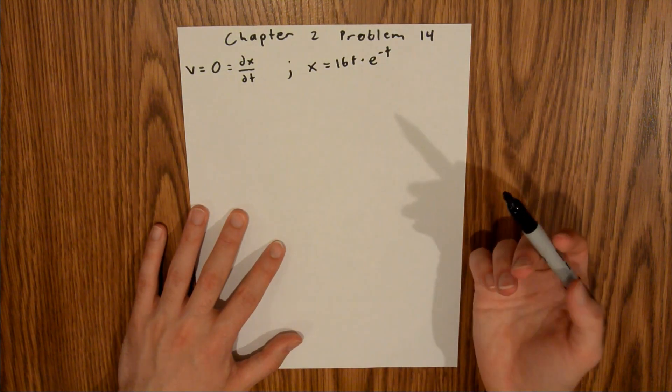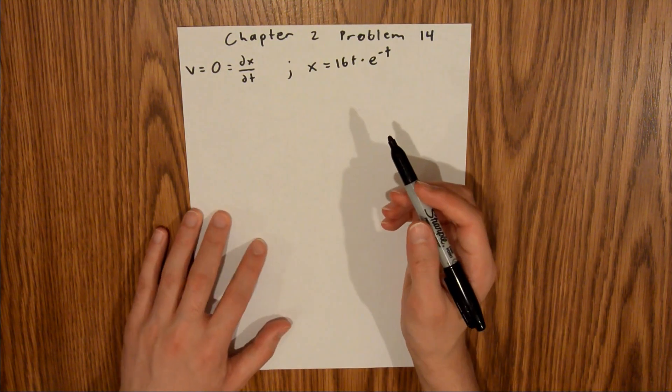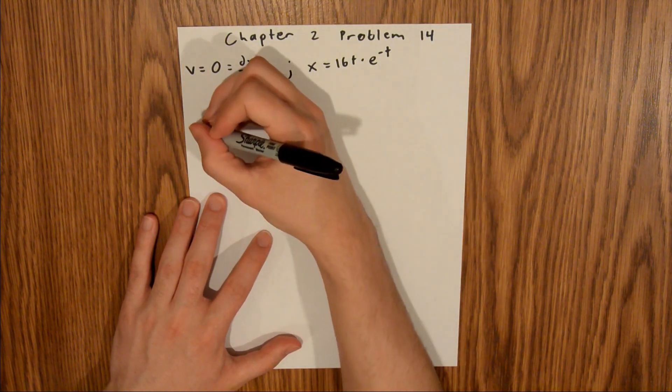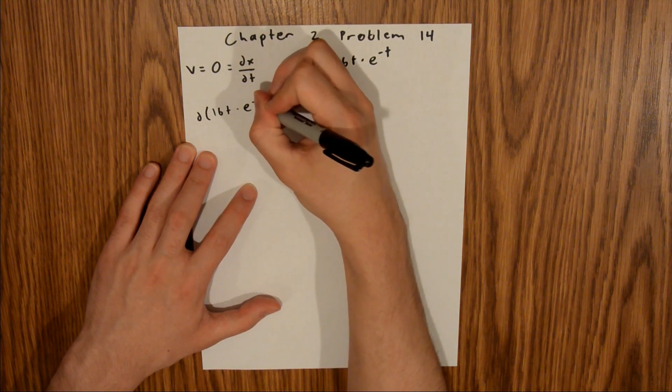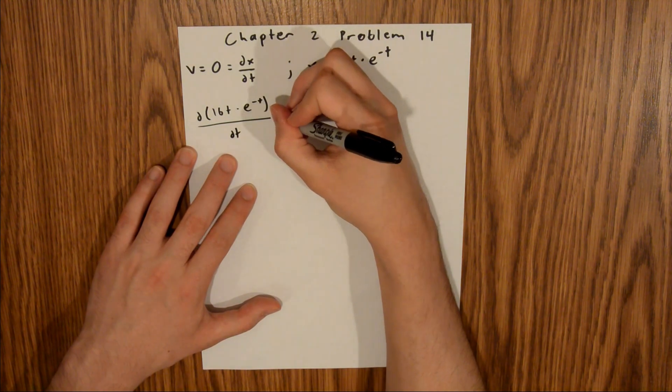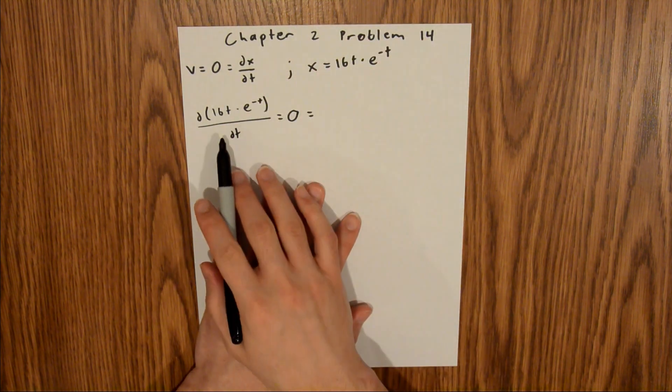So first, what we need to do is find the time at which the velocity is 0. And what we can do is take this derivative. So the derivative of 16t times e to the negative t with respect to time, that is equal to 0. And this requires the product rule.